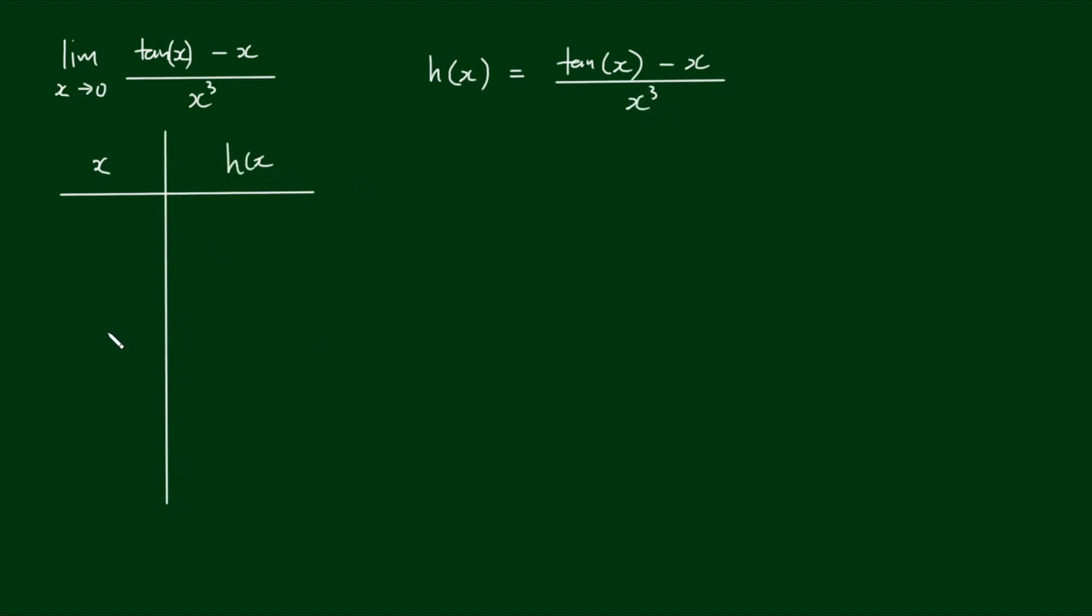And I'm going to choose values of x that get closer and closer to 0. So let's choose 1, 0.5, 0.1, 0.05, 0.01, 0.005. Let's see how we go with these numbers first.